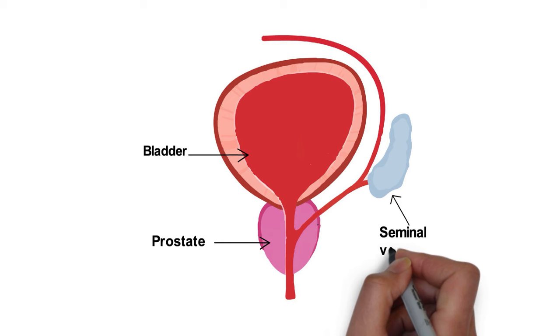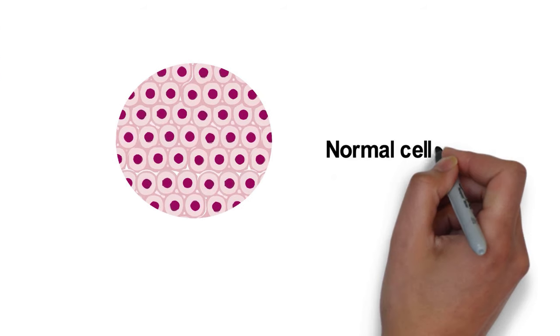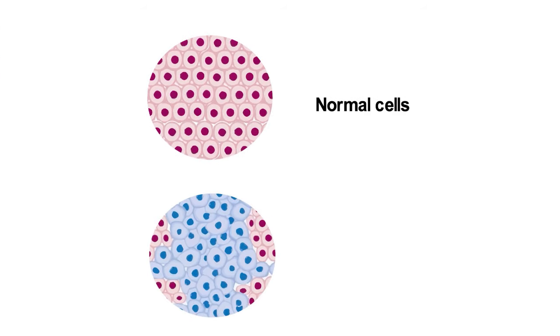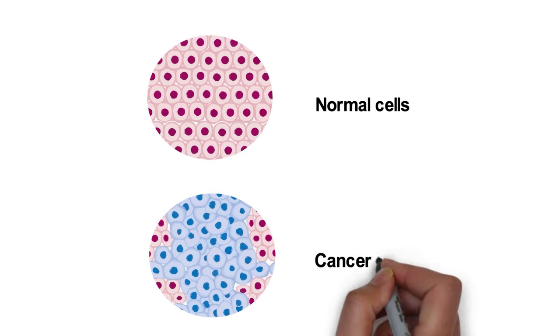So what is the prostate? It's part of the male reproductive system. It sits below the bladder and in front of the rectum. The prostate's job is to help form semen by producing fluid that mixes with sperm from the testicles. Prostate cancer happens when normal cells in the prostate grow faster or die more slowly than usual. This leads to a cancerous tumour over time.